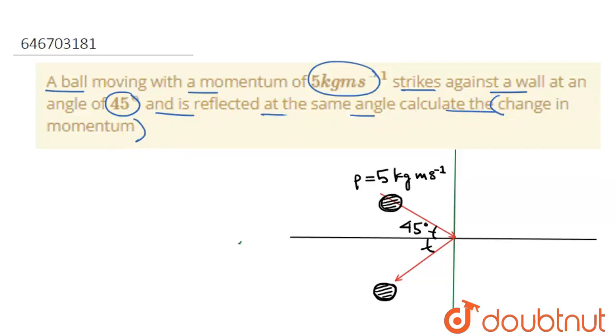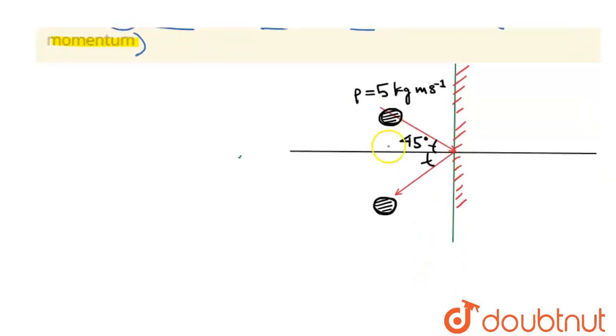So this is the ball that is striking the wall. This is the wall vertically, and the ball strikes it at 45 degrees with the horizontal and it bounces back with the same angle with the horizontal, that is 45 degrees. So we have to find the change in momentum after collision.